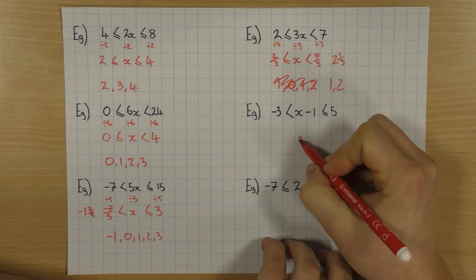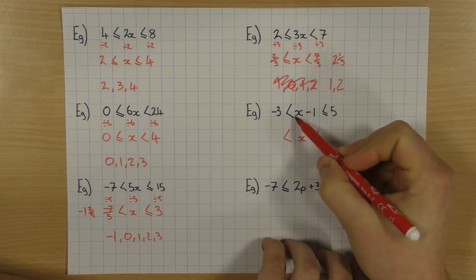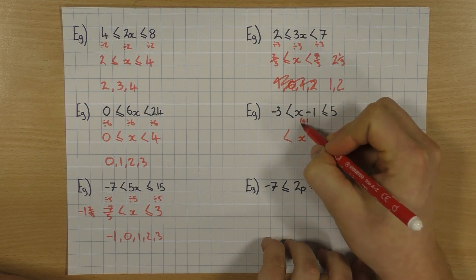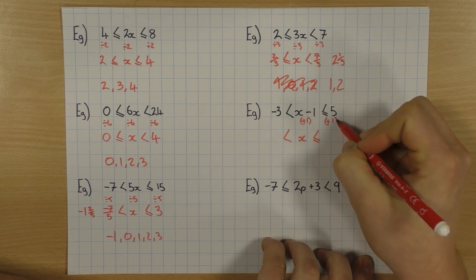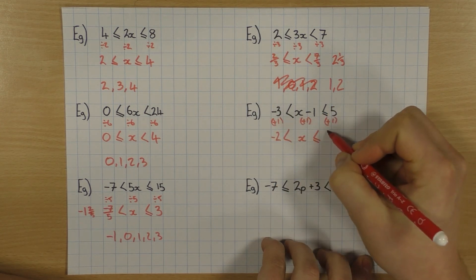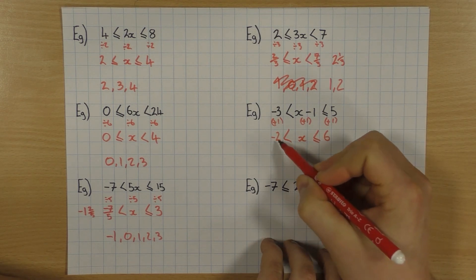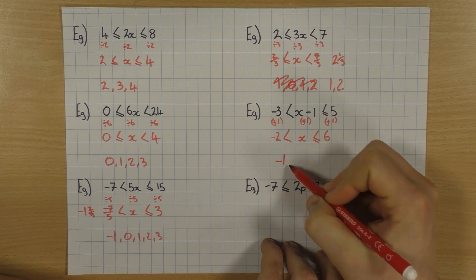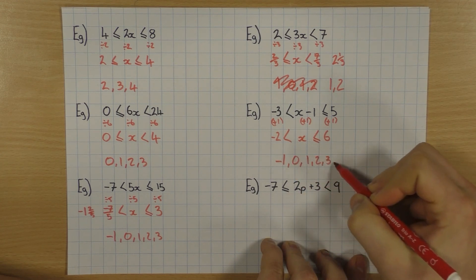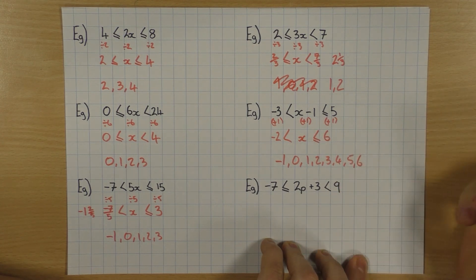This one here, again I just want it to be x. I've got x minus 1 — I want to get rid of the minus 1, so all I do is plus 1. If you do that to both sides: minus 3 plus 1 is minus 2, and 5 plus 1 is 6. What values could I have? Well, I can't include minus 2, but x is bigger than minus 2. So: minus 1, 0, 1, 2, 3, 4, 5. And I can include the 6.